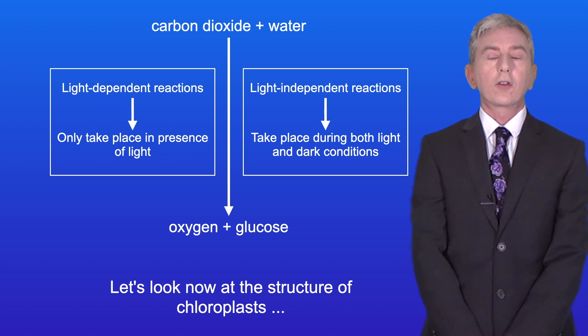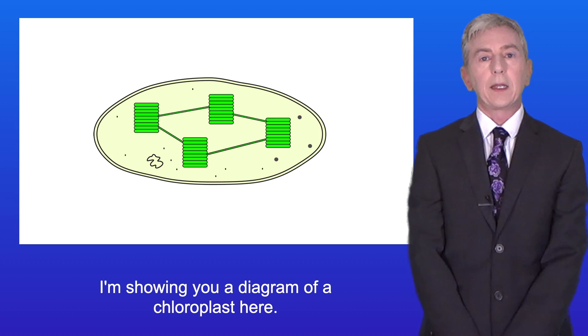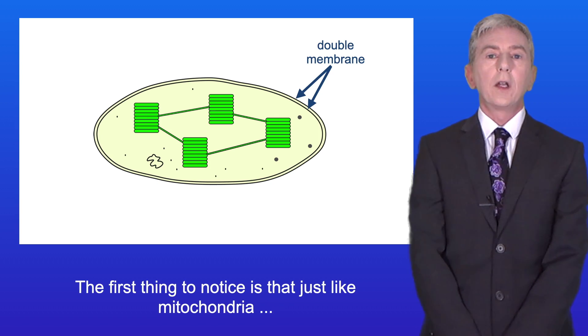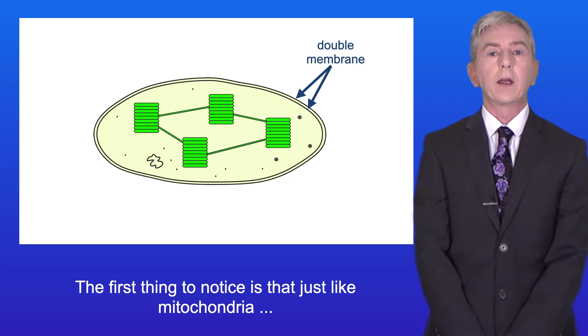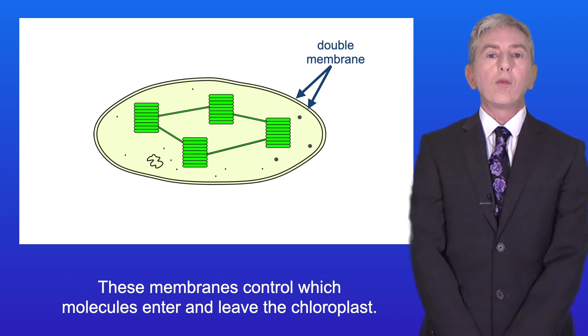So let's look now at the structure of chloroplasts and link the structures to their functions. I'm showing you a diagram of a chloroplast here. The first thing to notice is that just like mitochondria, chloroplasts are surrounded by a double membrane, and these membranes control which molecules enter and leave the chloroplast.